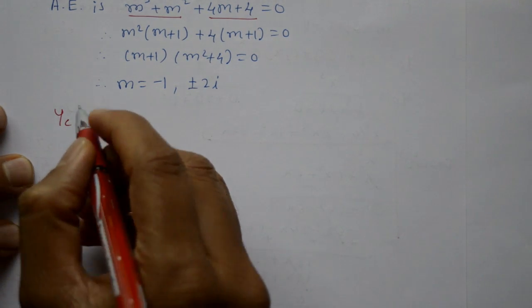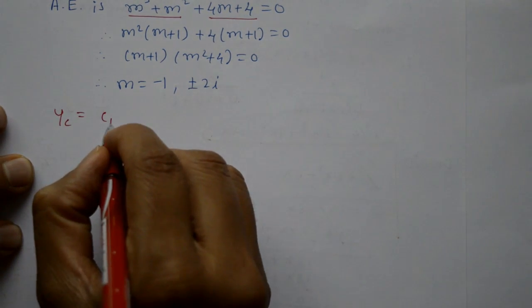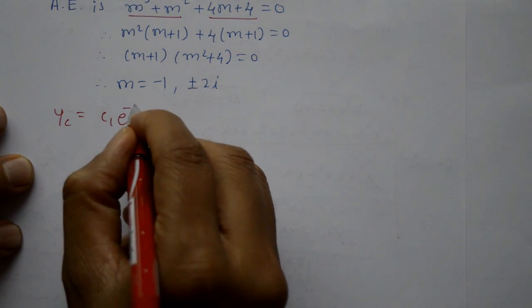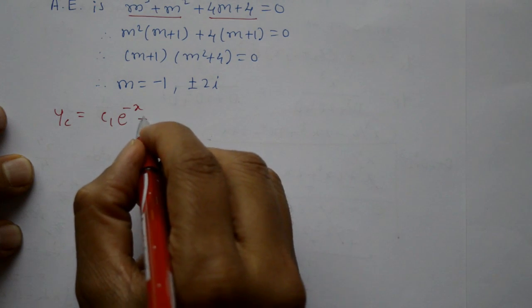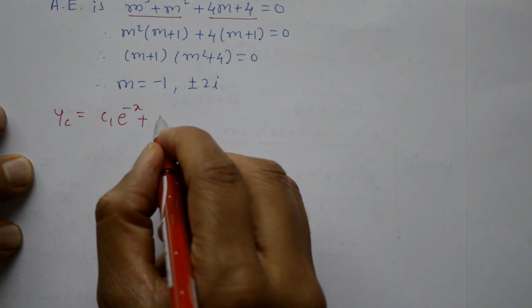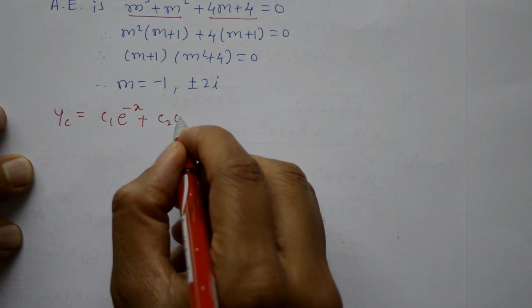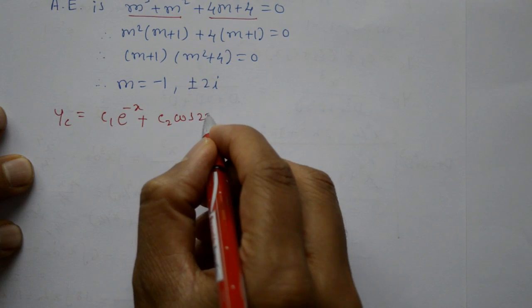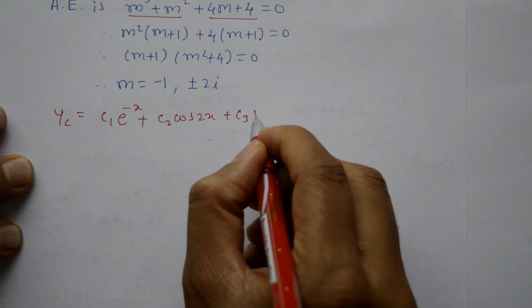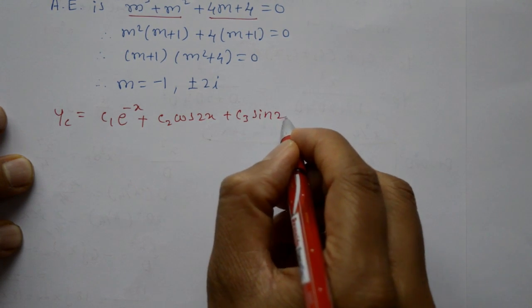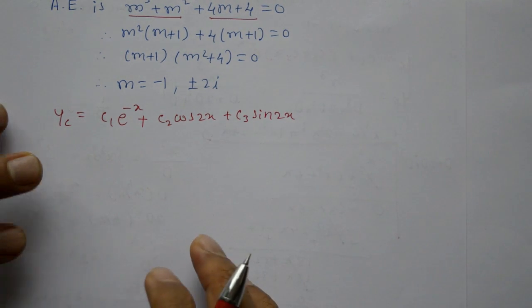Now the complementary function: since alpha is 0 and beta is 2, Yc = c₁e^(-x) + c₂cos(2x) + c₃sin(2x).